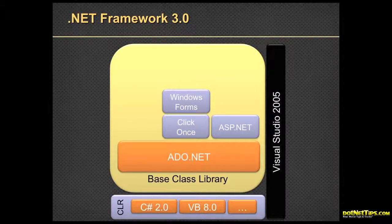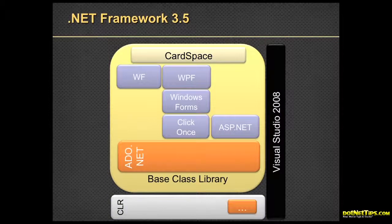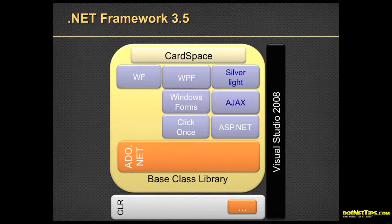In 3.0 there were not a lot of changes — same language versions, but we got WPF for Windows Presentation Foundation to work with Vista, Workflow (WF), and WCF, the new way to do all remoting and data communications in .NET. In 3.5 we got major improvements to Ajax — it was built into the framework rather than being an add-on. Silverlight also came out in 3.5. We also had improvements to WCF including REST support.